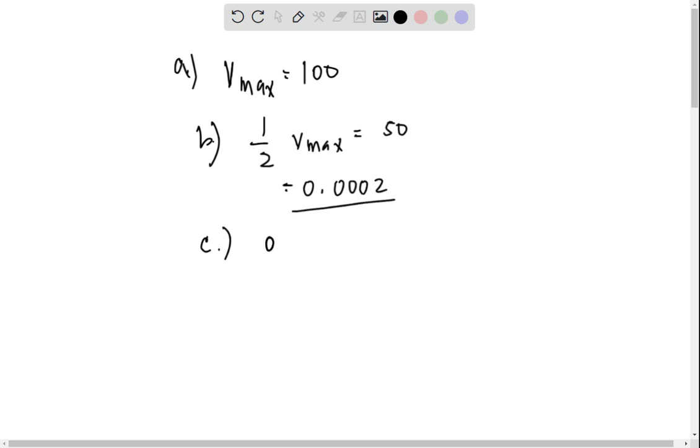For part C, for 0.0004, what will be the V0 in the absence of inhibitor? Definitely, this will be 66.7.